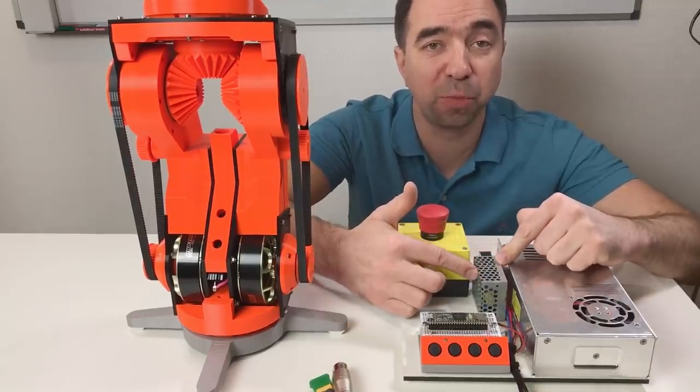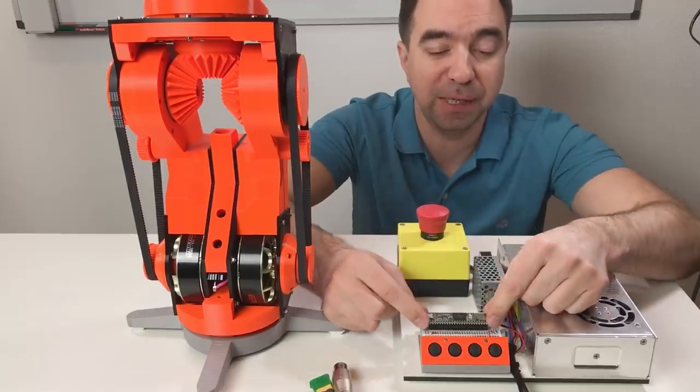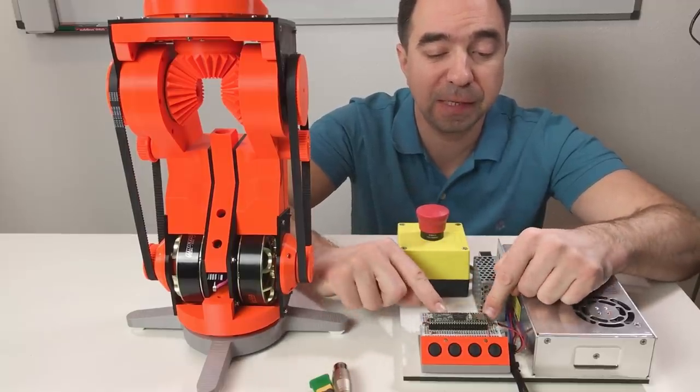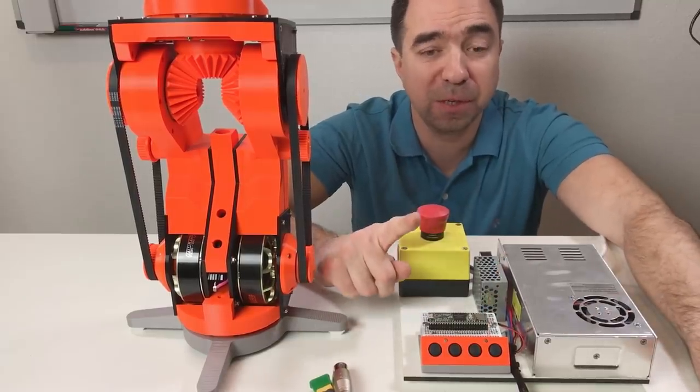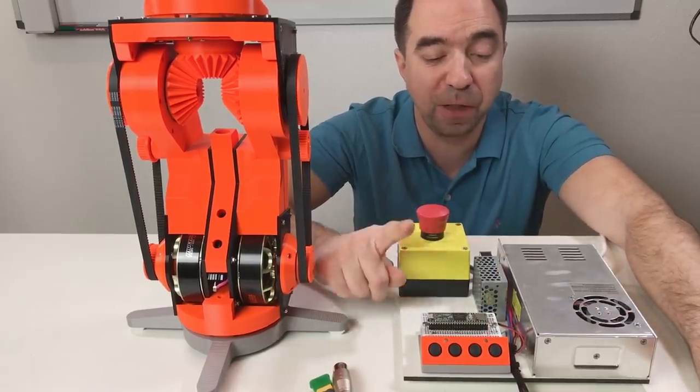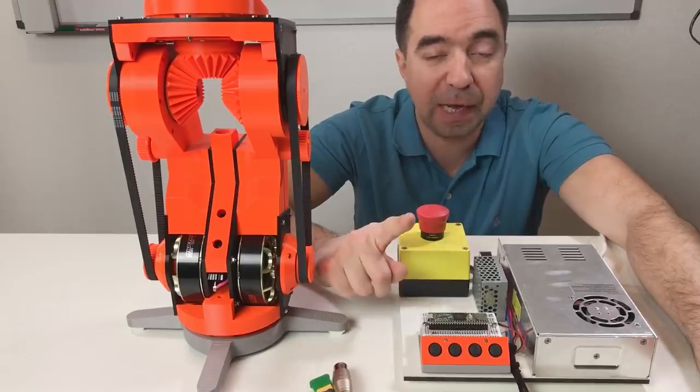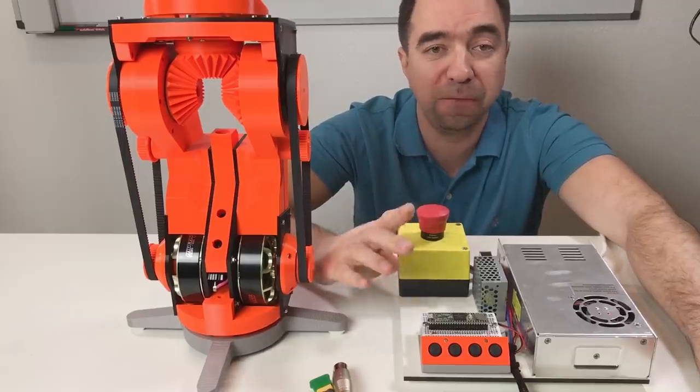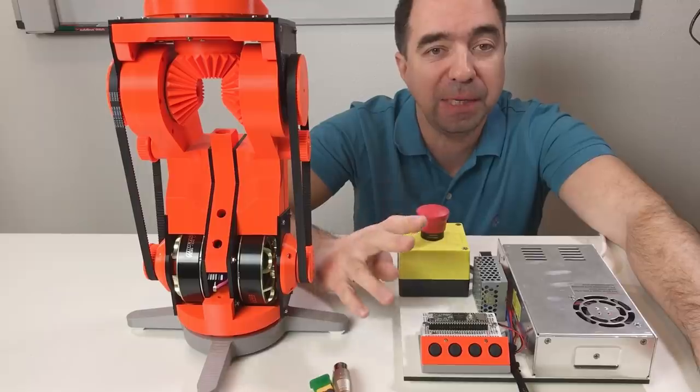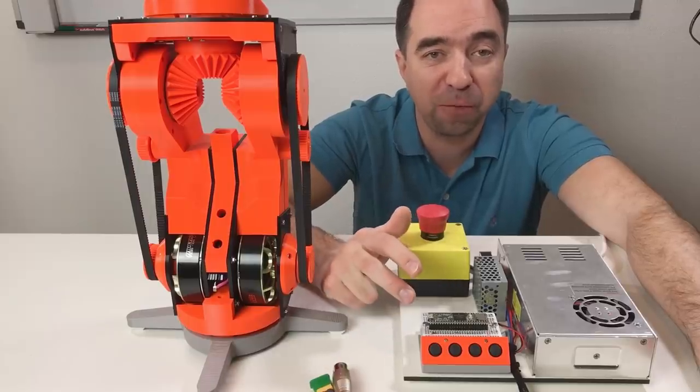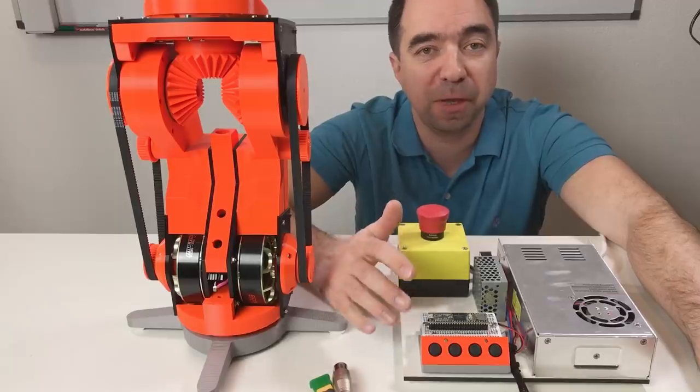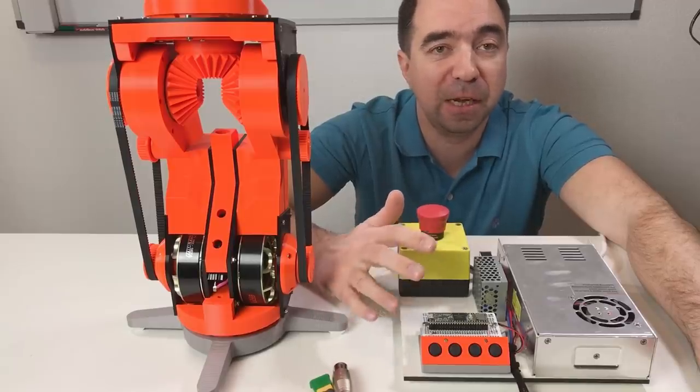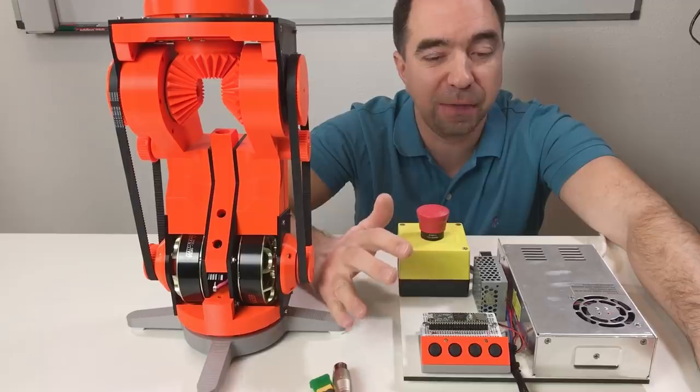This small power supply provides 5V for the Teensy board. This is the Teensy 3.6. Why do I use the Teensy 3.6? Because it has a lot of serial outputs. Like this I can control many O-Drive modules at the same time. I basically need to control four O-Drive modules because the robot arm is going to be 7 degrees of freedom, so seven motors. I need at least four O-Drives to control seven motors.